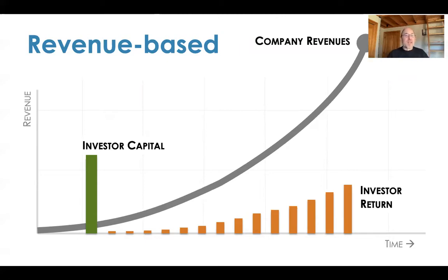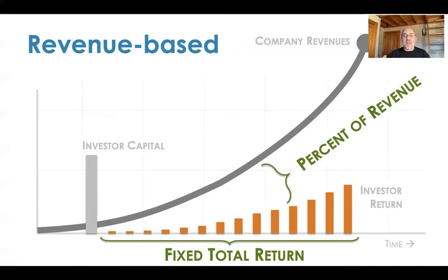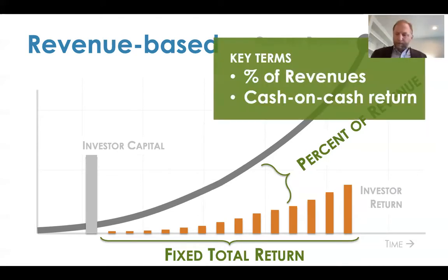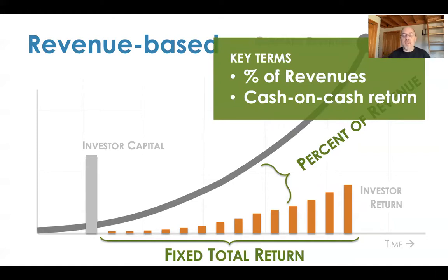Back to our framework: you provide some money to the company and they're promising to pay you back some money. And how they determine that? It's a percentage of their revenue. And typically it's a fixed amount of money, not a fixed amount of time. So when we're looking at the terms, those are really the only two terms that really matter. What percentage of revenue do you get as an investor? And what is your total return — cash on cash? If I put in $100,000, do I get back $150,000, $180,000, $200,000, $225,000?